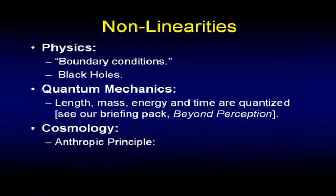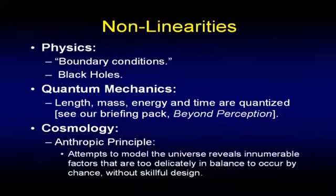In cosmology we have the anthropic principle. When we attempt to model what we know about the physical universe, we discover that there are a huge number of factors that if you change just a tiny bit, make life impossible. It's not just two or three — there are dozens and dozens of these, some of which have to be exactly right to one part in 10 to the 15th. That's hugely precise. All of this argues not only that the universe was designed, but that there's somebody maintaining that design — something many people overlook.